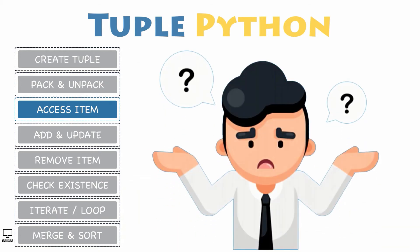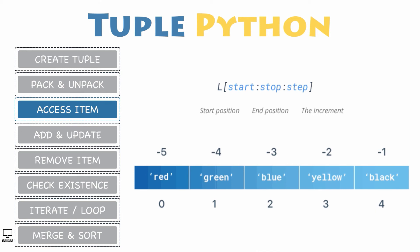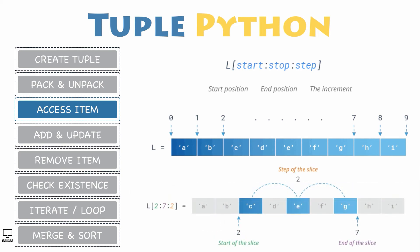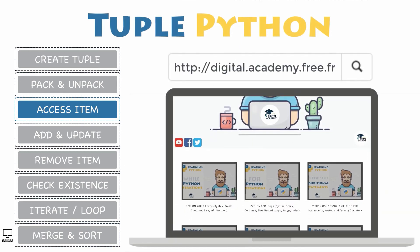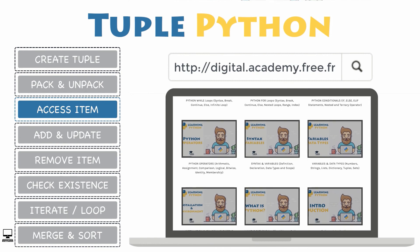But how would you access a range of items from your tuple? You will need to slice a tuple using the slicing operator. Tuple slicing is similar to list slicing, in which you specify the start and end indexes with an optional step size. Each parameter can be positive or negative indexing values. Do you want to discover more about Python slicing operators? Please check out our blog and the video about lists in Python.